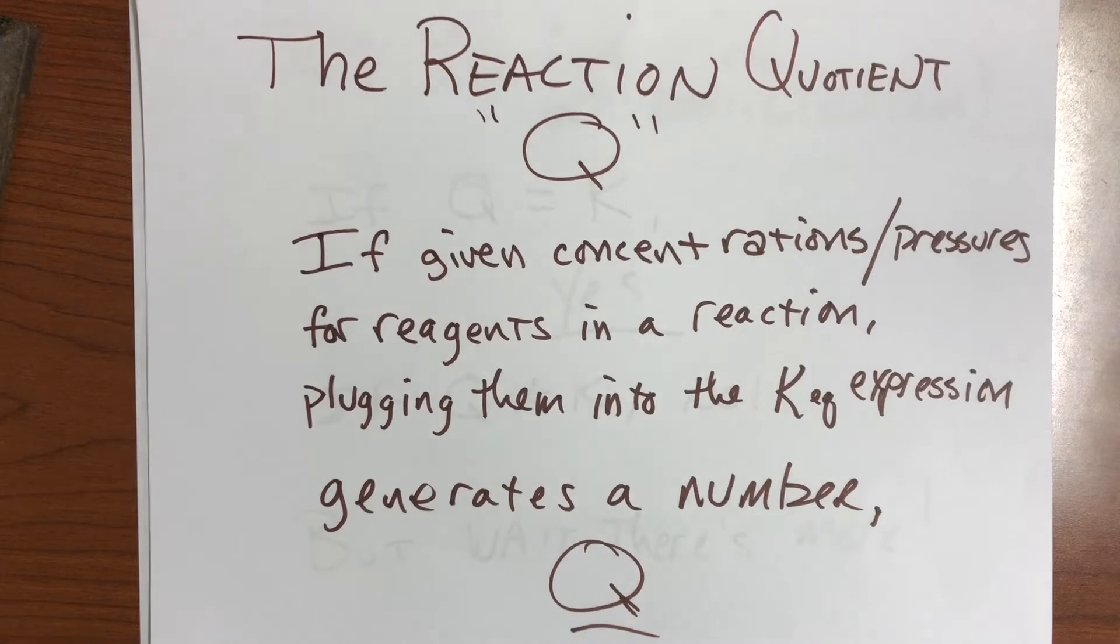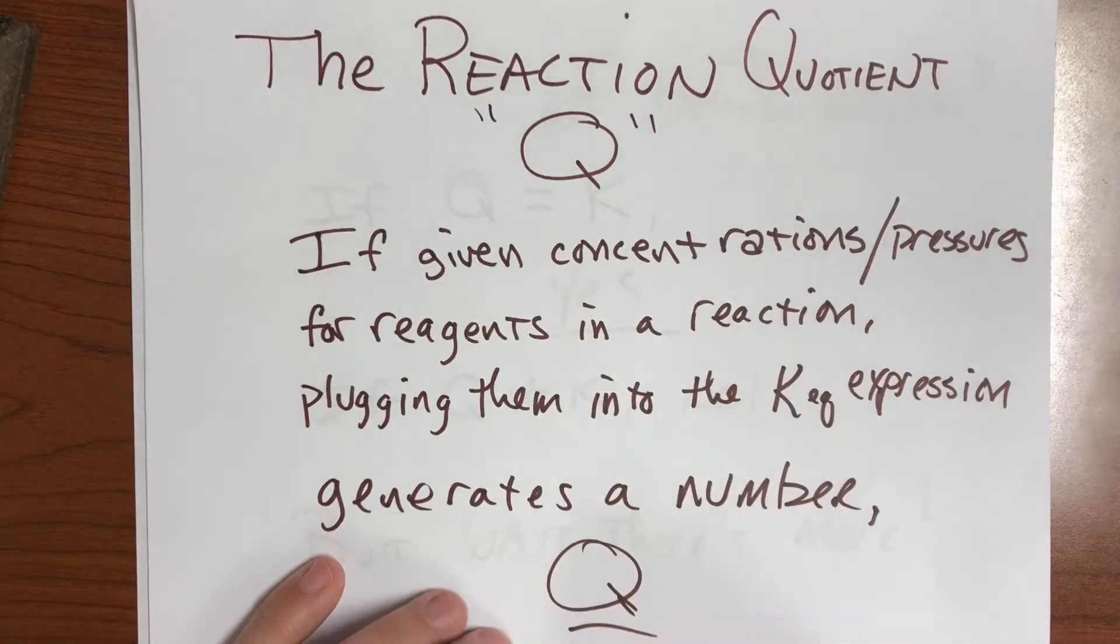If you're given a concentration or pressure for reagents in a reaction, you can plug those things into an equilibrium constant expression. That will generate this number we call the reaction quotient, or Q.